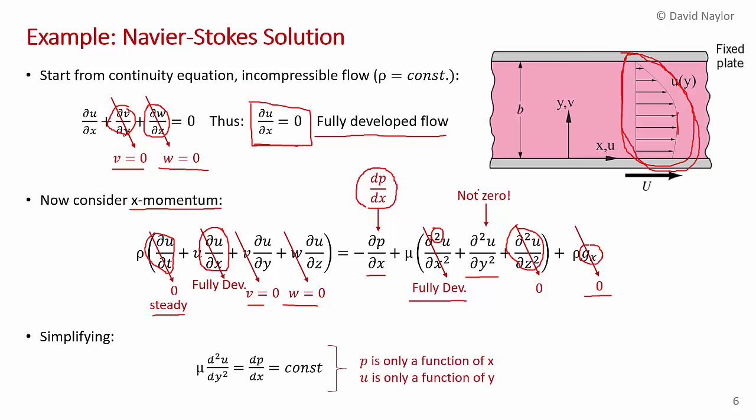We're left with just the pressure gradient term and the ∂²u/∂y² viscous term. The simplified equation becomes: μ × d²u/dy² = dp/dx. Note that I've replaced the partial derivative with a full derivative because u is only a function of y — it doesn't change in x or z. Similarly, pressure is only a function of x, so we use a full derivative there too.